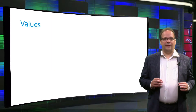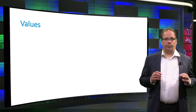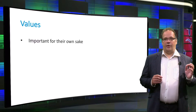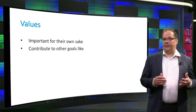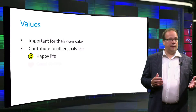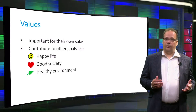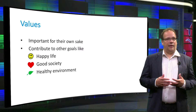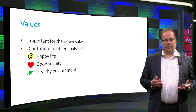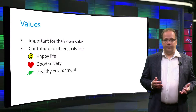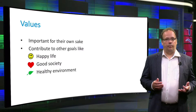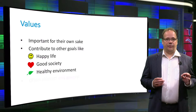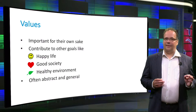First, values are things that we have reason to support because they are important, either for their own sake or because we believe they contribute to other goals like a happy life, a good society, or a healthy environment. Examples of values that are relevant in design are human well-being, safety, security, sustainability, privacy, and justice. As we can see, values are usually referred to by quite general and abstract nouns. This is why they are relevant in many situations.